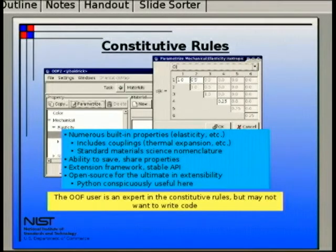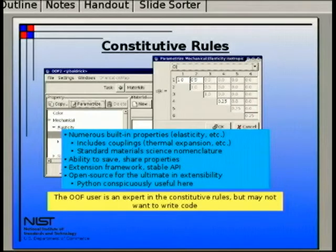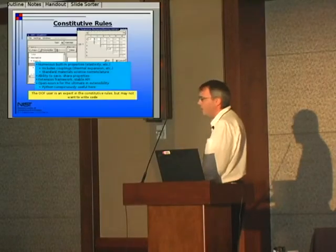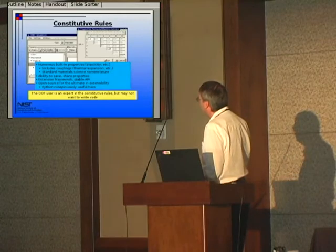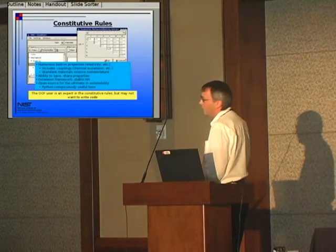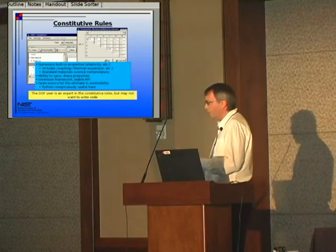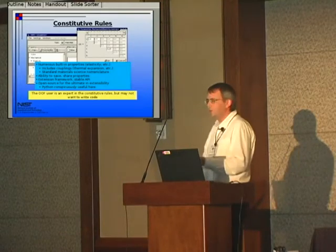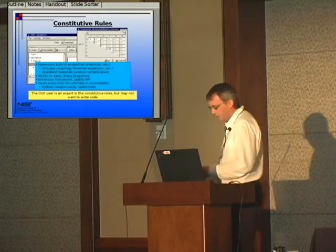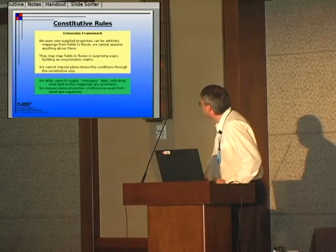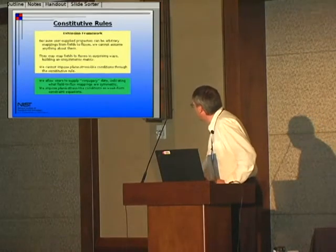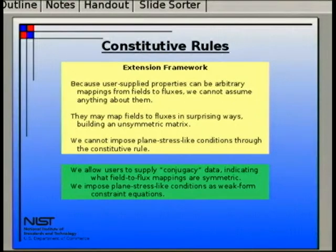Constitutive rules are a very important part — the ability to customize them. A constitutive rule is the mapping between fields and fluxes; it tells you how a given material behaves when loaded in a particular way. We have a number of built-in constitutive rules for simple cases: linear elasticity, thermal conduction, chemical conduction, and so on. And we have an extension framework, which I'll talk more about in a minute.